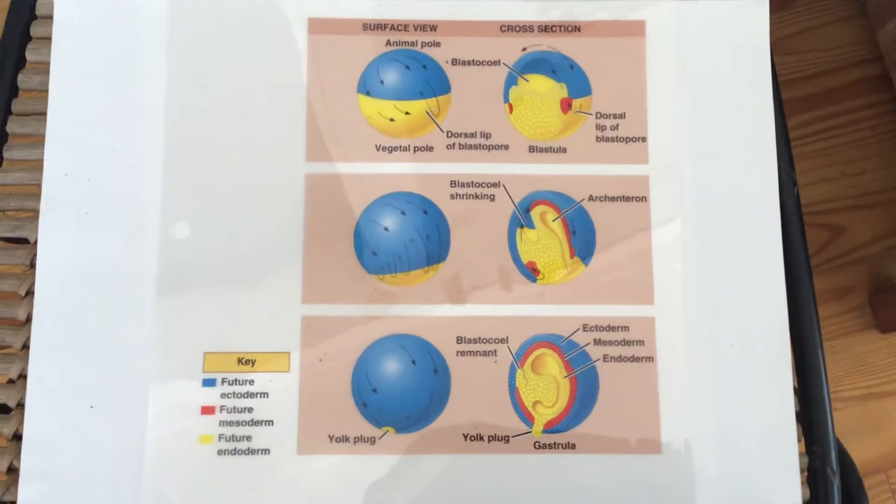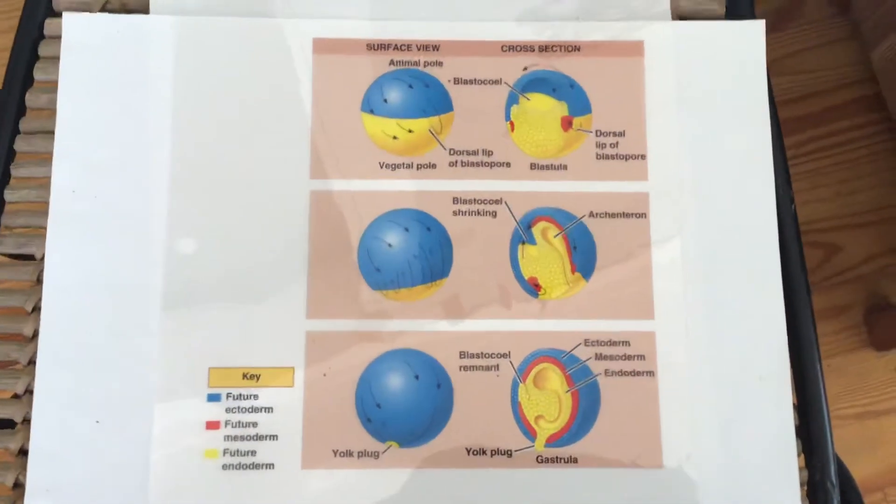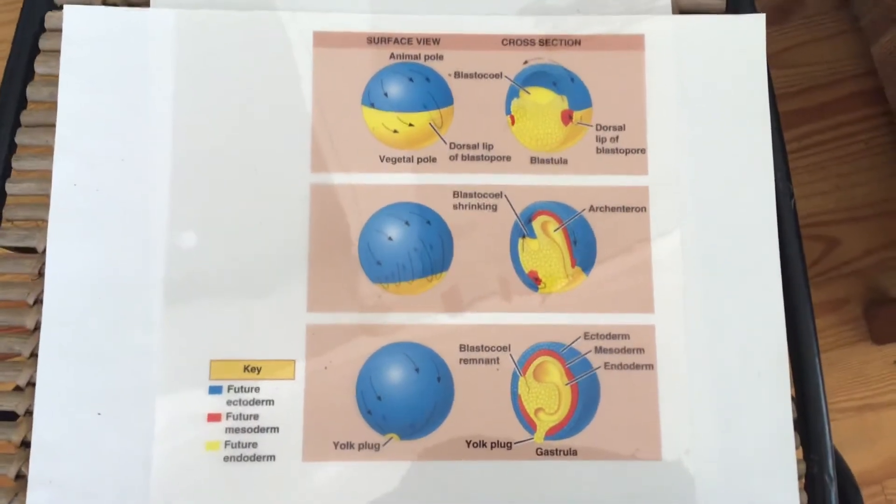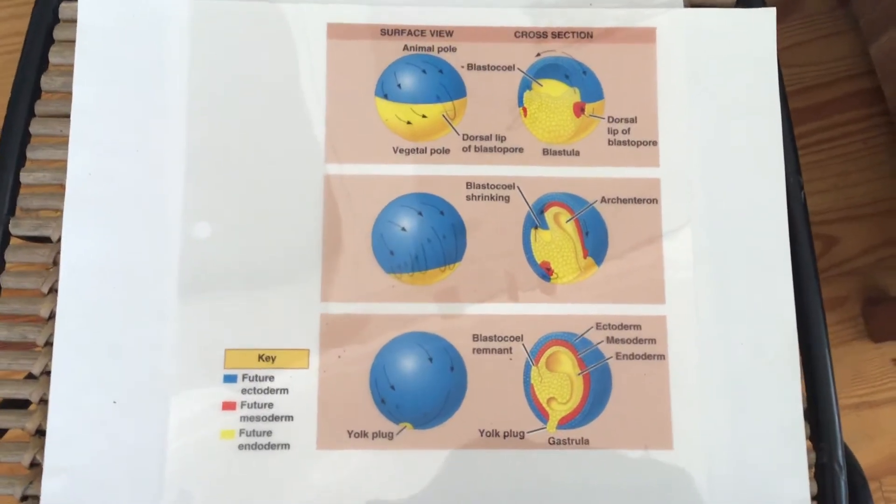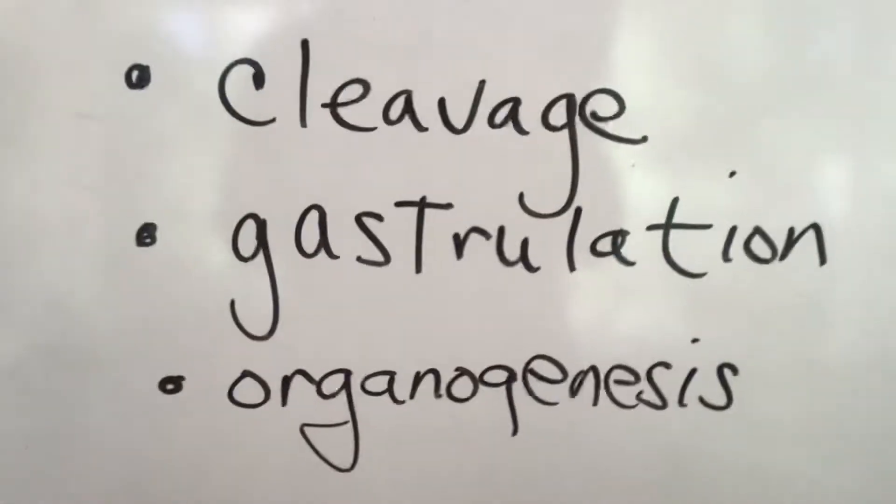They're kind of derived together and forming different parts of the body, so it gets a little bit complicated. There is a table in your book that shows you what becomes what, but you're not required to memorize that. Just kind of take a look at it though. And then the last part is organogenesis.